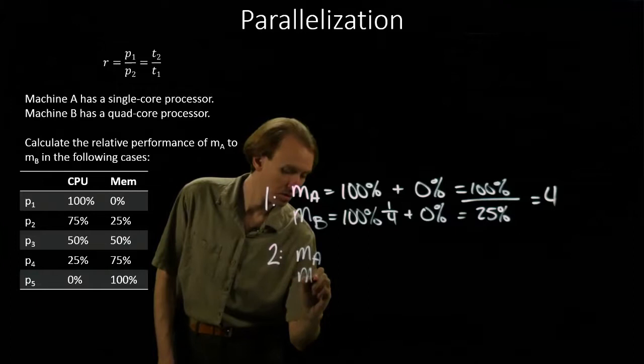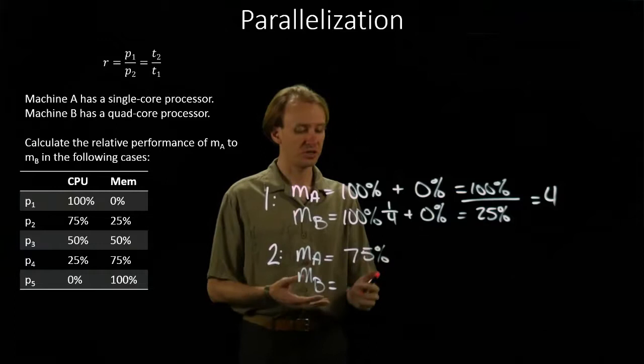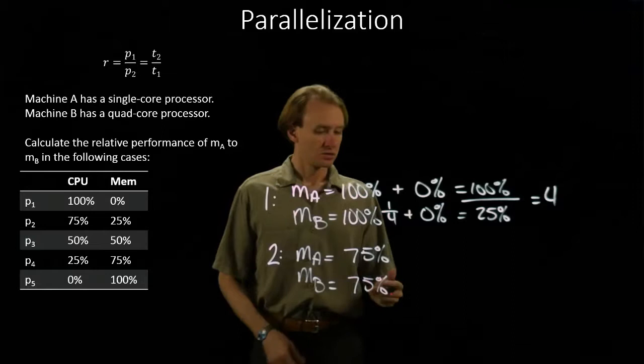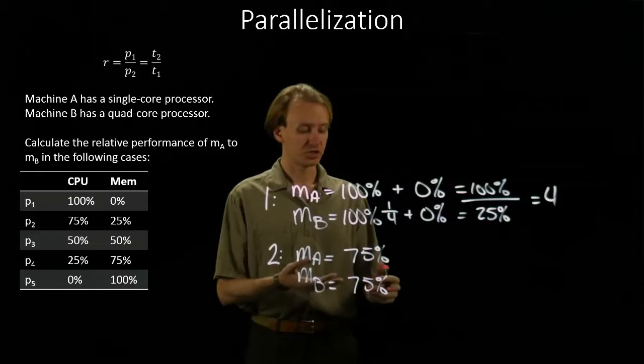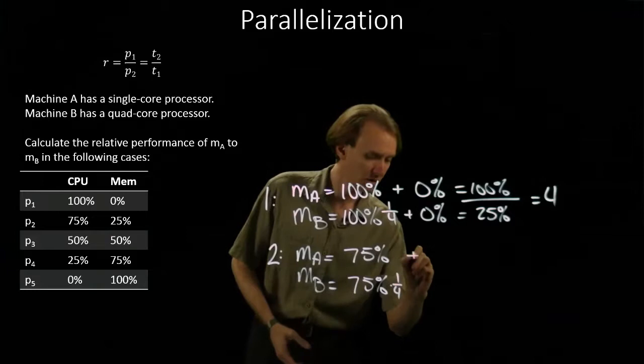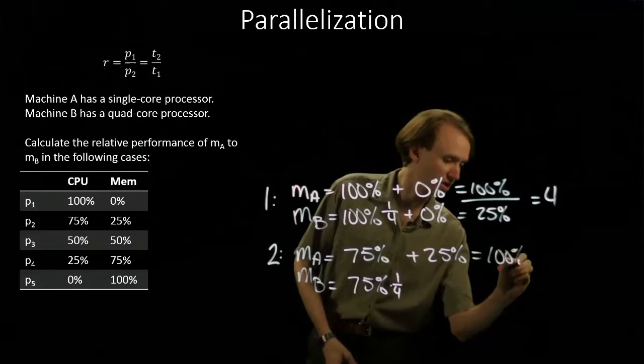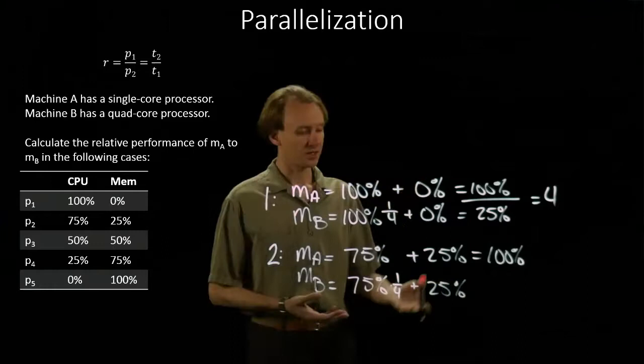With program number two, we're spending 75% of the operations involve the CPU, and the other 25% involved memory. Machine A doesn't see any speedup because we're using it as the baseline. Machine B takes one-fourth as much time to run the CPU instructions, because it's got four processors to run those instructions. Machine A spends 25% of its time running the memory instructions for a total of 100% of the time. Machine B also spent that same amount of time running the memory instructions.